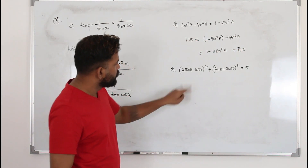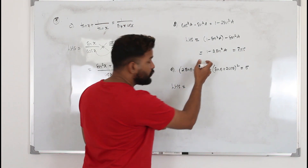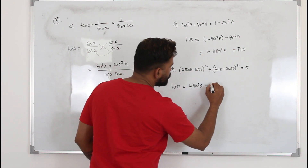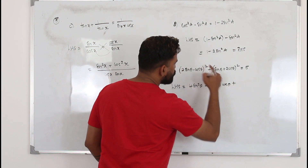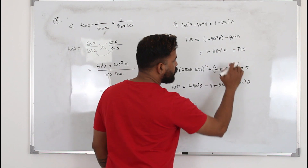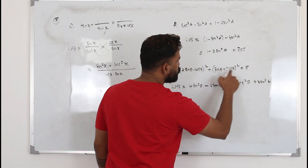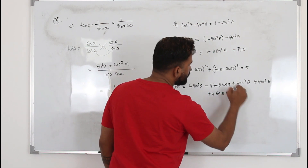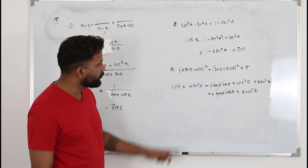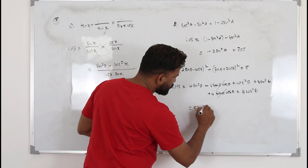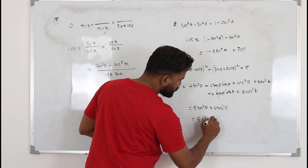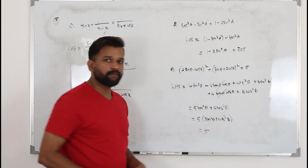For part E, start with the left-hand side — just open the brackets. Apply (a - b)² and (a + b)² expansions. The cross terms (±4 sin θ cos θ) cancel each other. Then 4sin²θ + sin²θ = 5sin²θ and 4cos²θ + cos²θ = 5cos²θ. Take 5 as a common factor: 5(sin²θ + cos²θ) = 5(1) = 5. That is how you prove it.